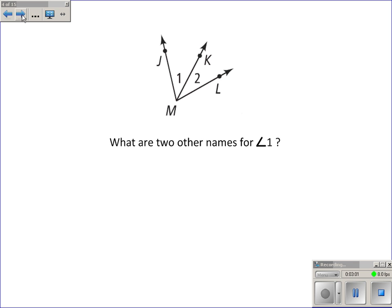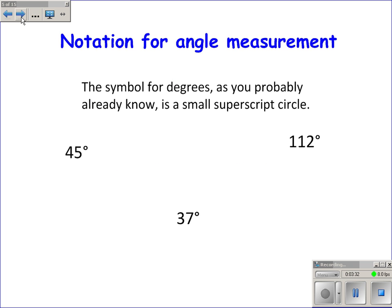Make sure you got this. What are two other names for angle 1? For angle 1, which is right here, it's angle J, M, K, or we could use angle K, M, J. Let me point out that you cannot say angle M, because there's more than one angle that has the vertex at M.